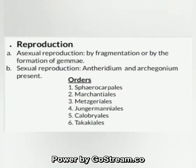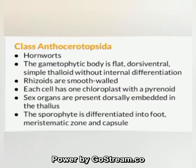Reproduction: asexual reproduction by fragmentation or by formation of gemmae; sexual reproduction with antheridia and archegonia present. Orders of Hepaticopsida include: Sphaerocarpales, Marchantiales, Metzgeriales, Jungermanniales, Calobryales, and Takakiales.